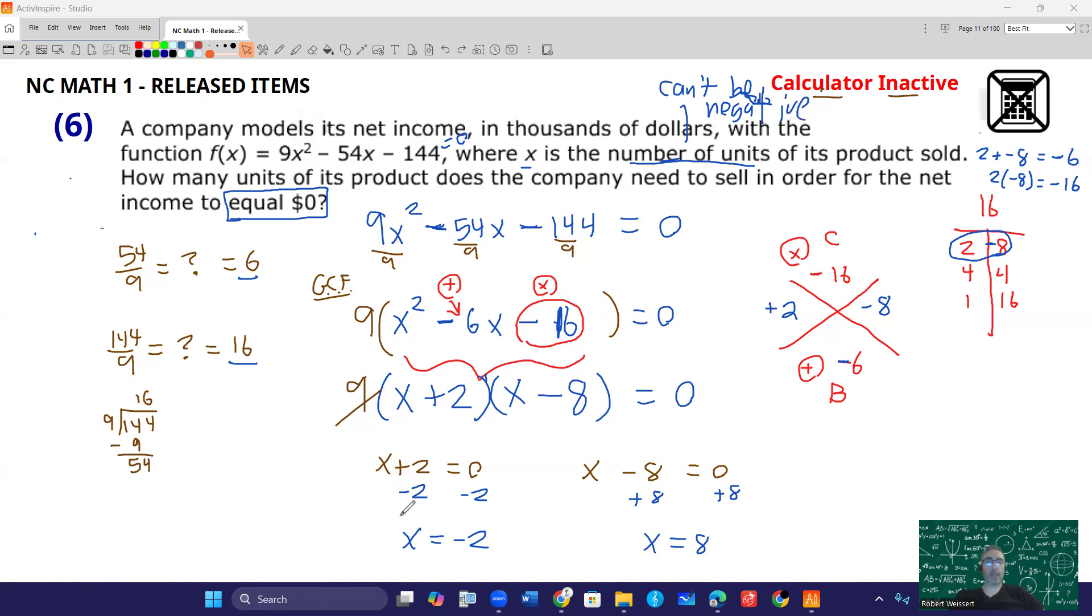So your real answer is going to be 8. Since it can't be negative, we're going to rule out that negative 2. So the answer to this question, how many units of its product does the company need to sell in order for the net income to equal 0? It's 8, 8 units.